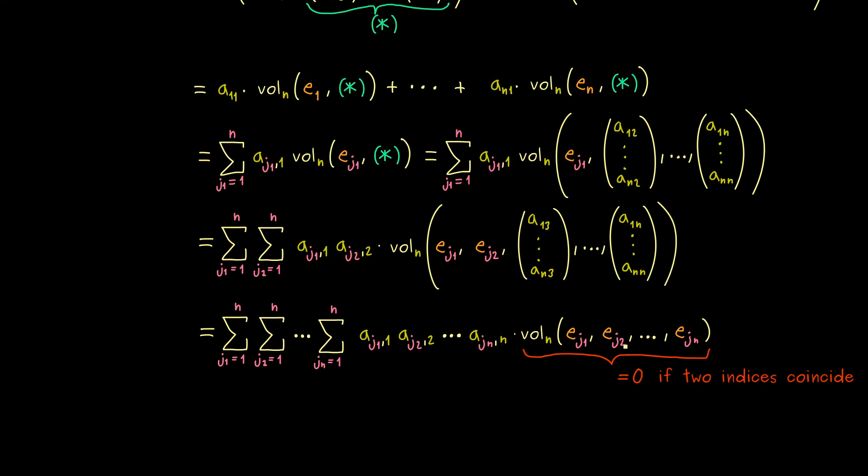Therefore, we can say if two indices here have the same value, we get out 0. This is very nice because it means we can just ignore all the cases where at least two indices coincide in our sum.